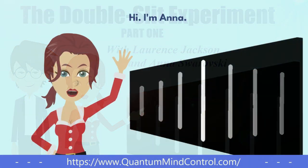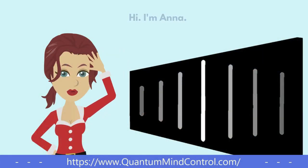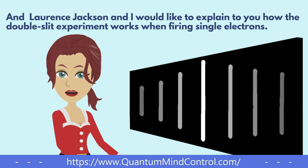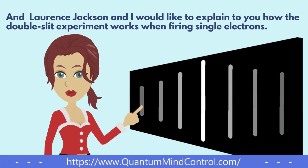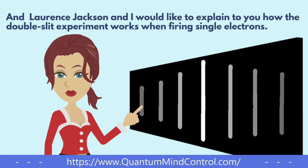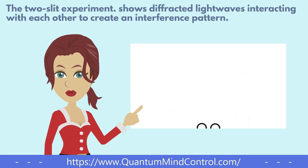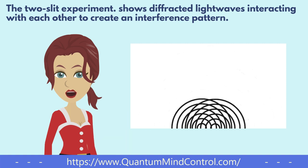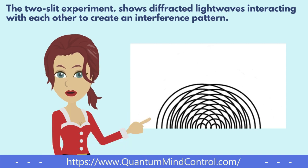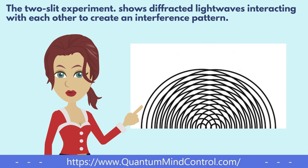Hi, I'm Anna and Lawrence Jackson, and I would like to explain to you how the double-slit experiment works when firing single electrons. The two-slit experiment shows diffracted light waves interacting with each other to create an interference pattern.